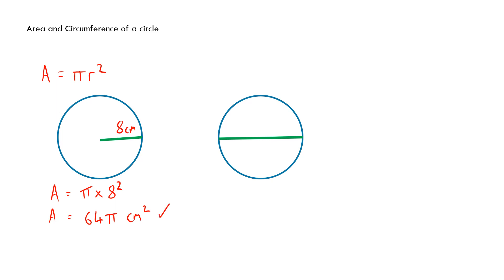That's an exact answer in terms of pi. Typing it into a calculator and pressing the SD button to convert to a decimal gives 201.1 cm² to one decimal place. Now let's work out the circumference instead — there are two ways of doing it.